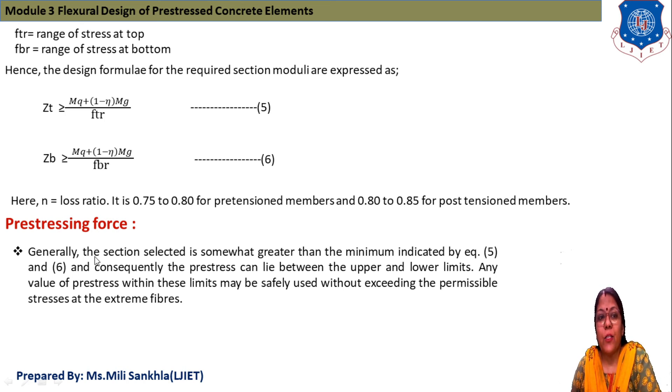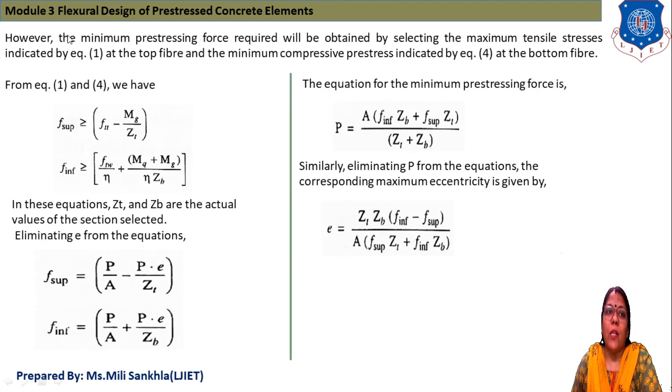Now, what is pre-stress force? Generally, the section selected is somewhat greater than minimum indicated by equation number 5. We provide a section, and the section we take generally will be minimum according to this section modulus. Pre-stress can lie between upper and lower limits. Any value of pre-stress within this limit may be safely used without exceeding the permissible stress at extreme fibers. The minimum pre-stressing force required will be obtained by selecting the maximum tensile stresses indicated by equations 1 and 4.